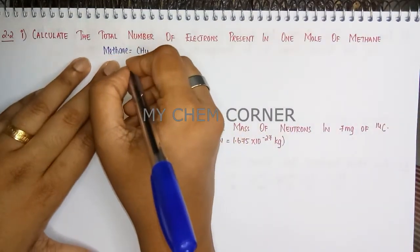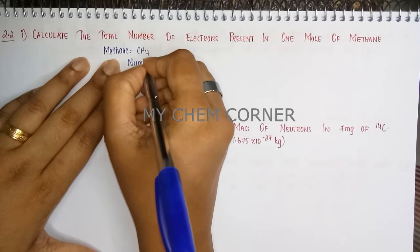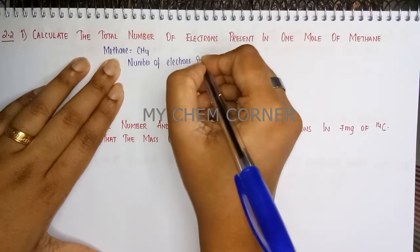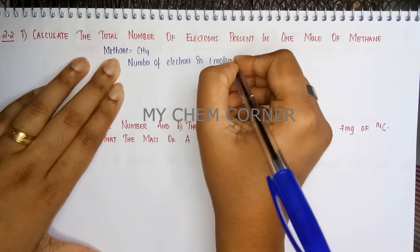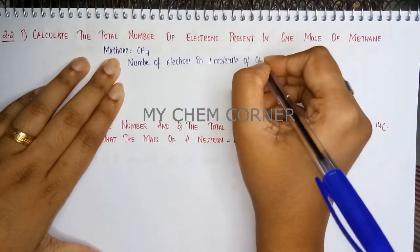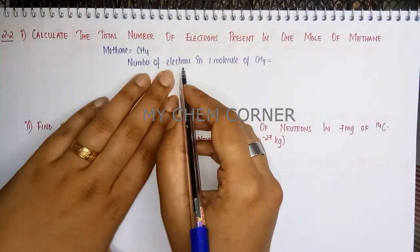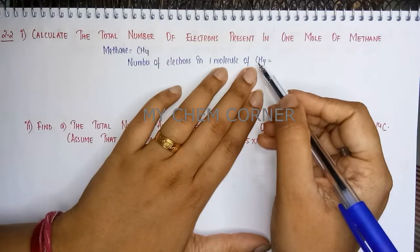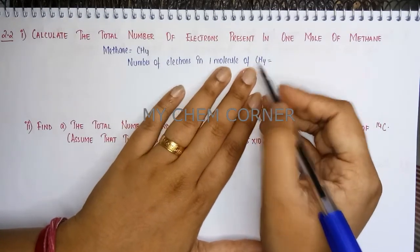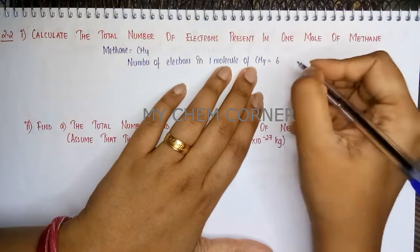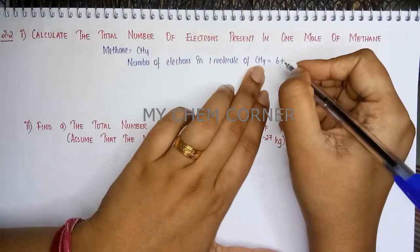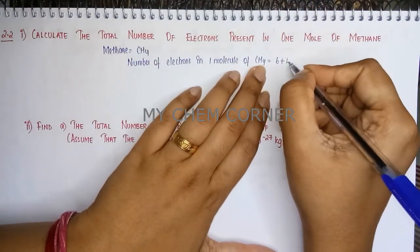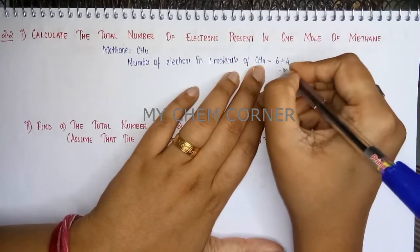Now we need to find how many electrons are in one molecule of methane. The number of electrons equals the atomic number: carbon has atomic number 6, so 6 electrons. Hydrogen has 1 electron, and we have 4 hydrogens, so 4 × 1 = 4. Therefore, one molecule of methane contains 6 + 4 = 10 electrons.